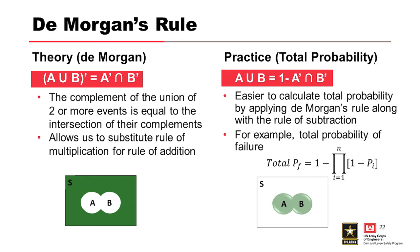DeMorgan's rule is a useful shortcut. In practice, we use it to get total probabilities, and you'll see in the upcoming exercise why it makes calculations much easier. Combined with the rule of subtraction, we can get a total probability of failure by taking 1 minus the product of (1 − P_i) for each individual failure mode's probability. This is a simple mathematical shortcut used frequently in risk analysis.